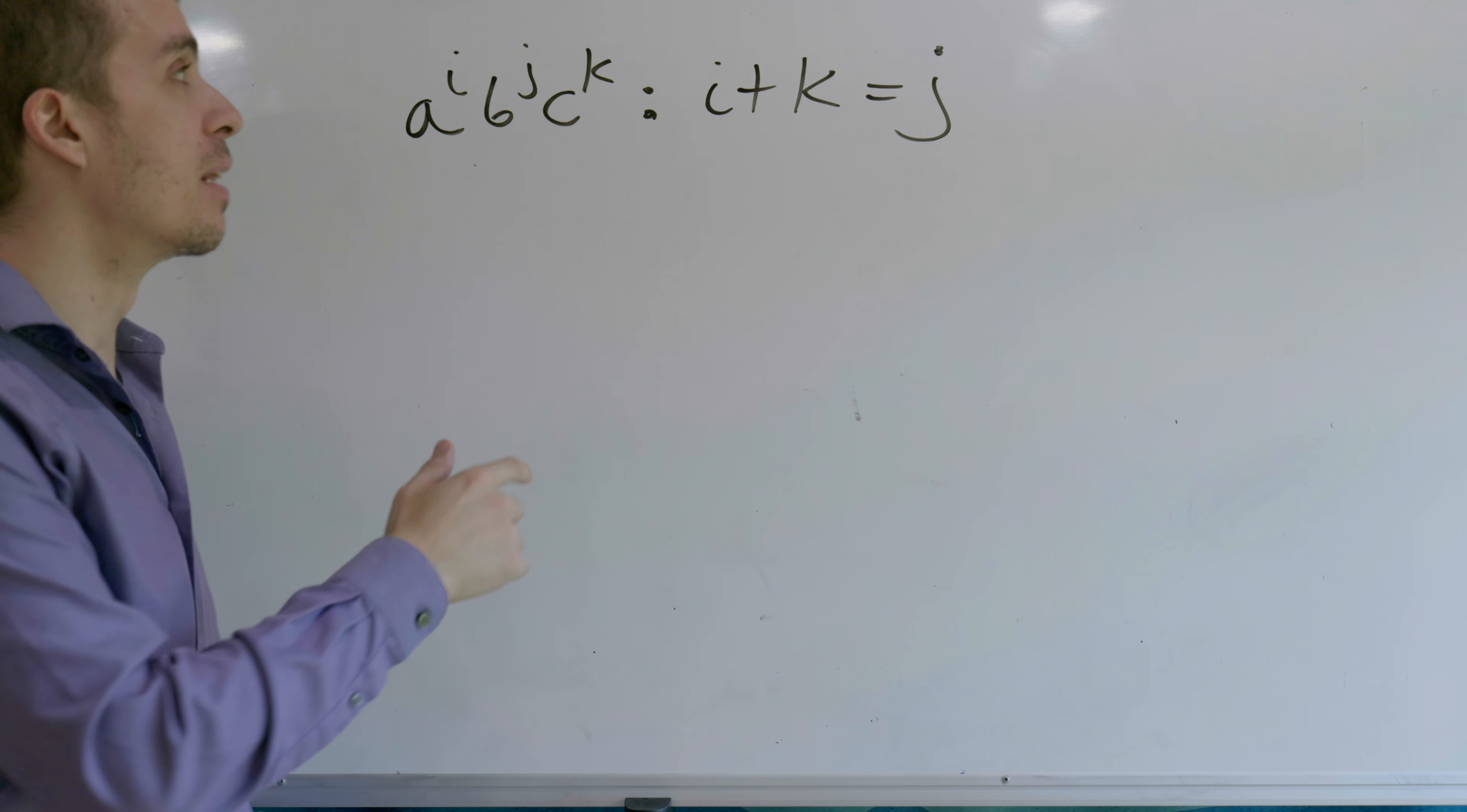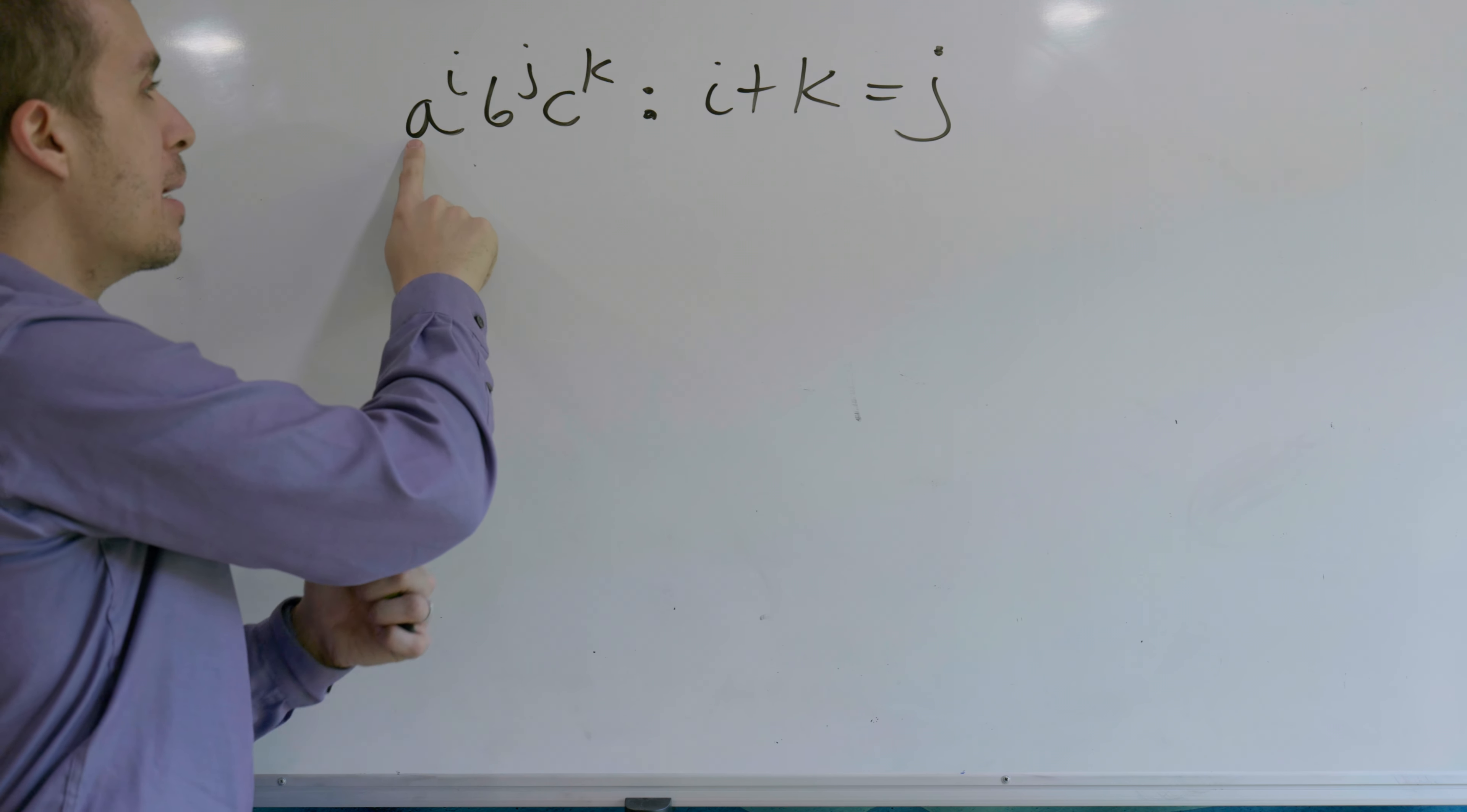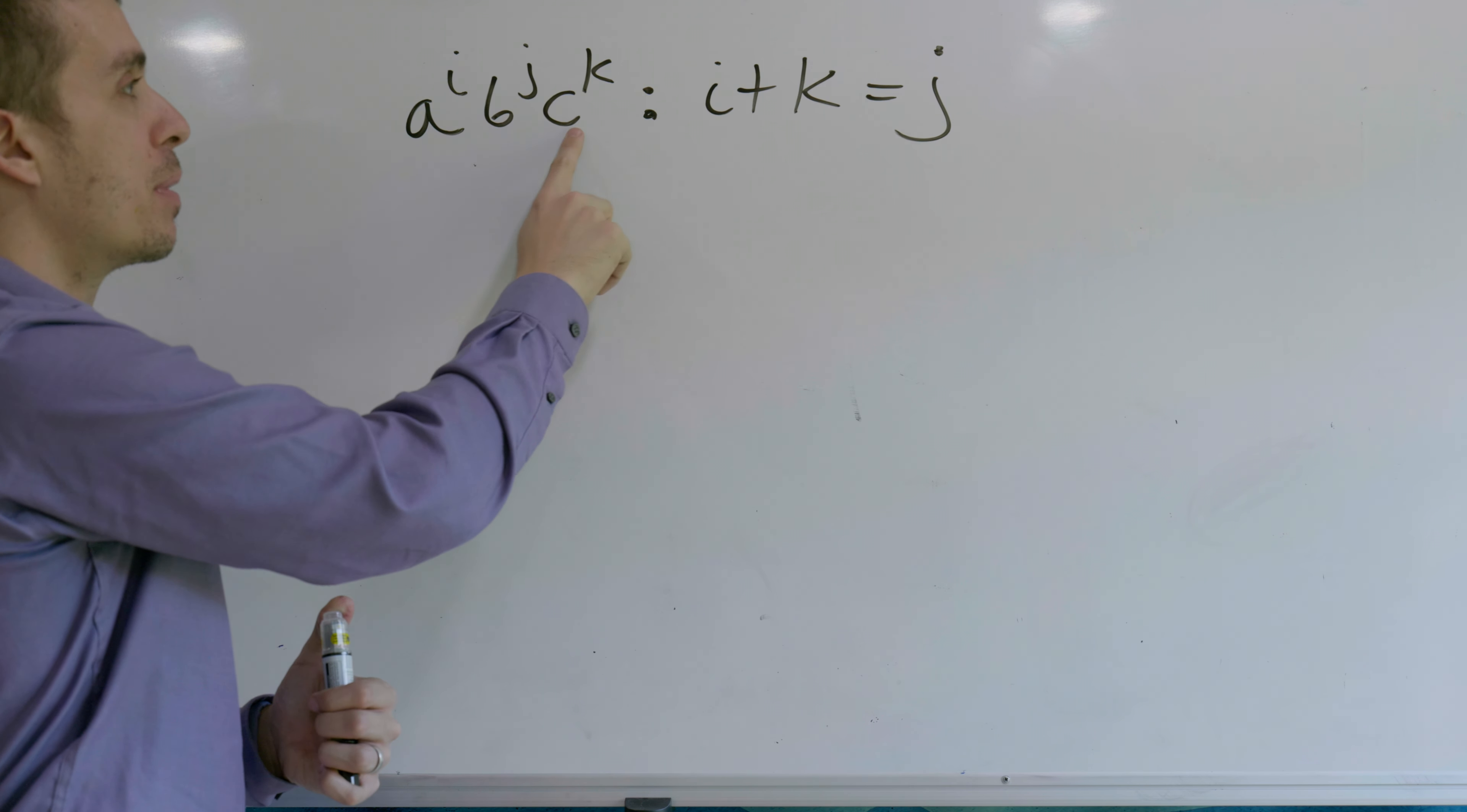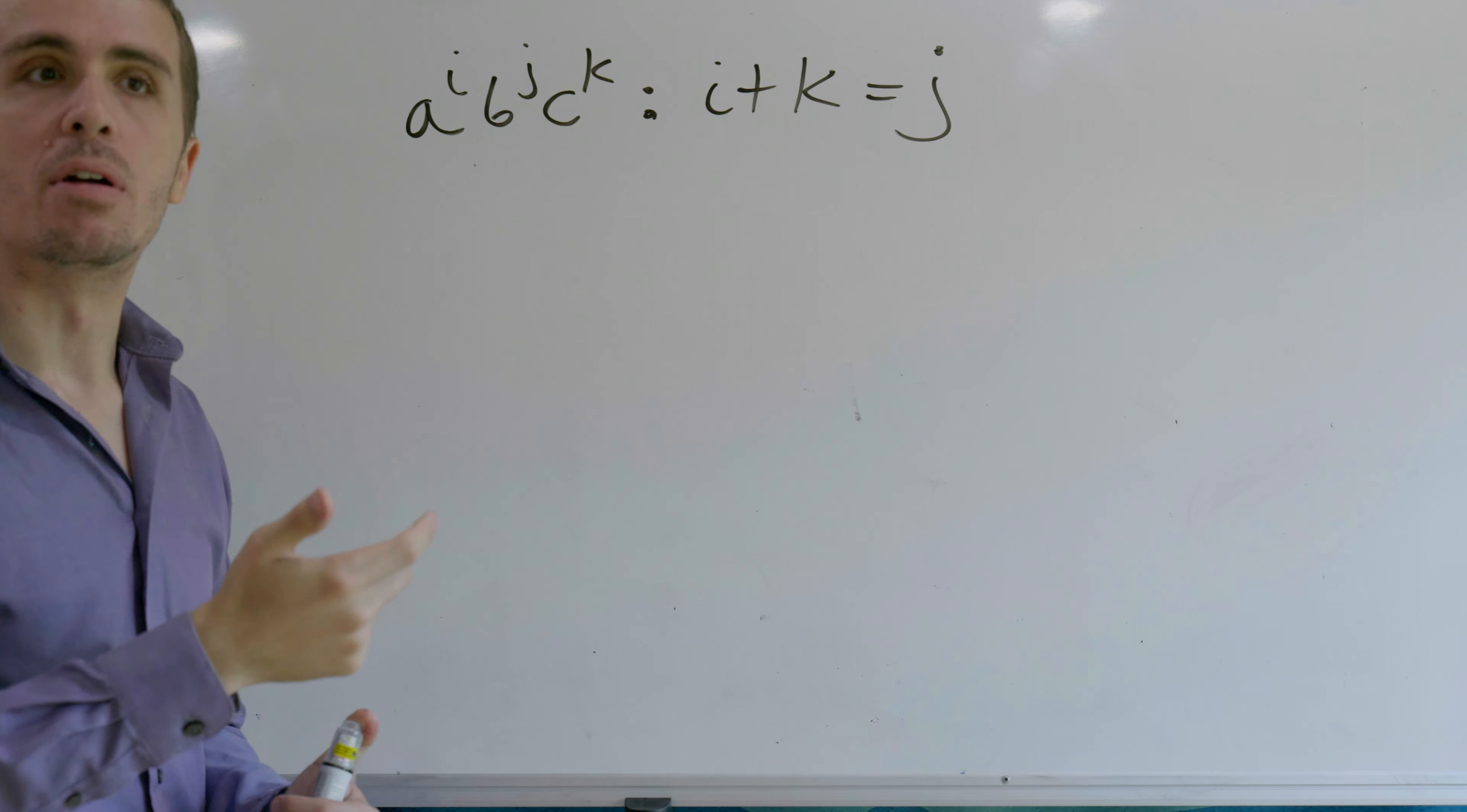Let's make a context-free grammar for this language, which is the set of all strings a^i b^j c^k, where the number of a's (which is i here) plus the number of c's (which is k here) is equal to the number of b's.